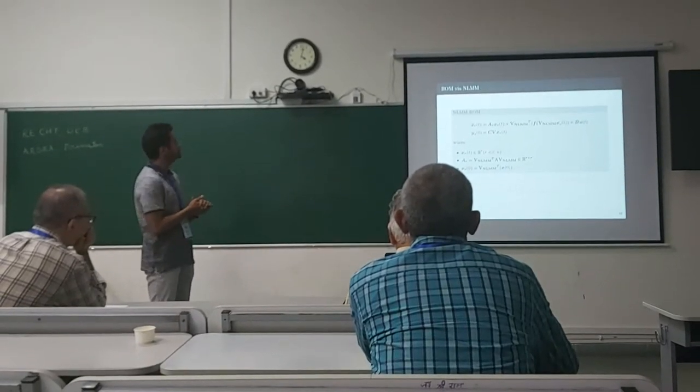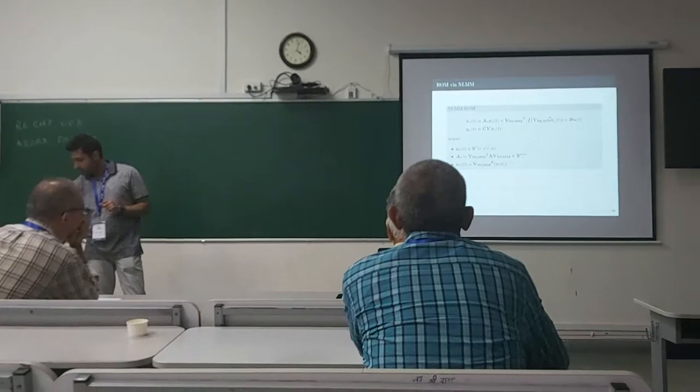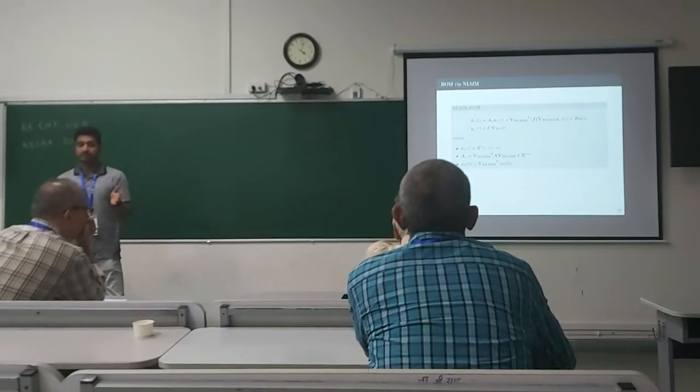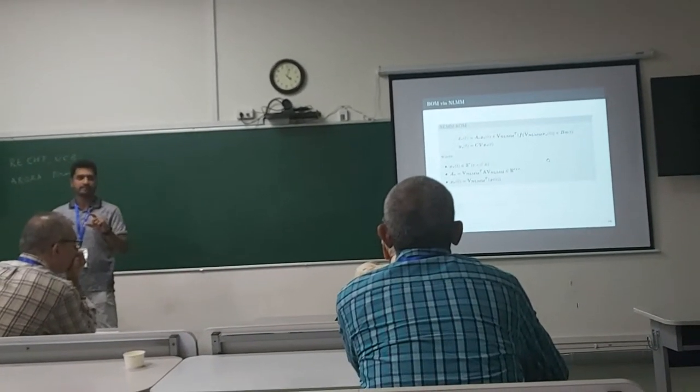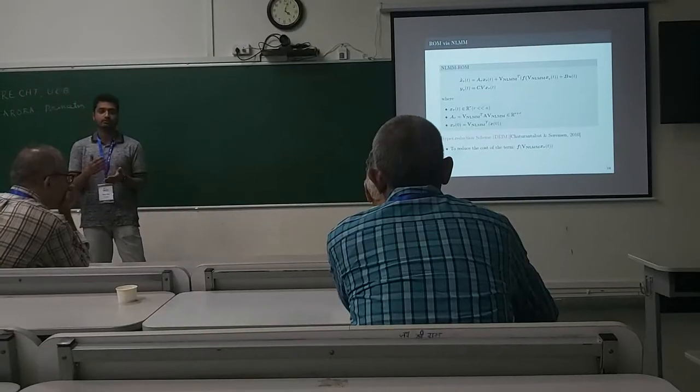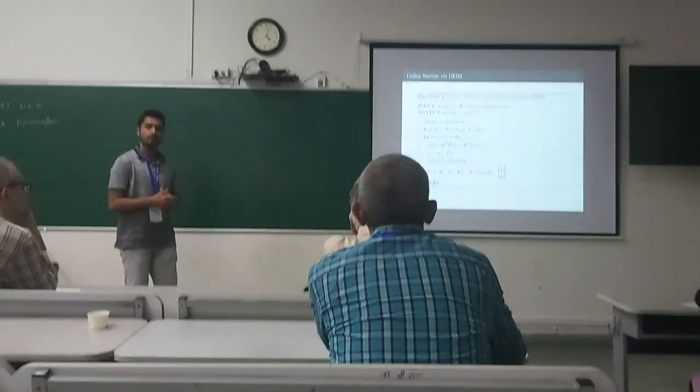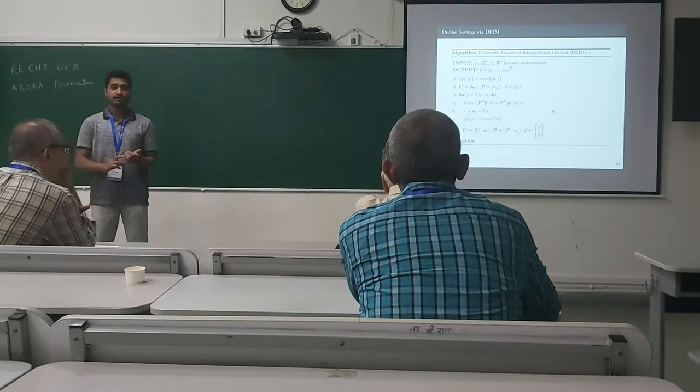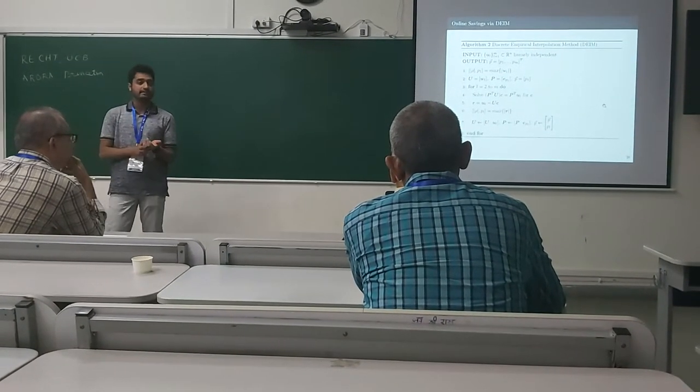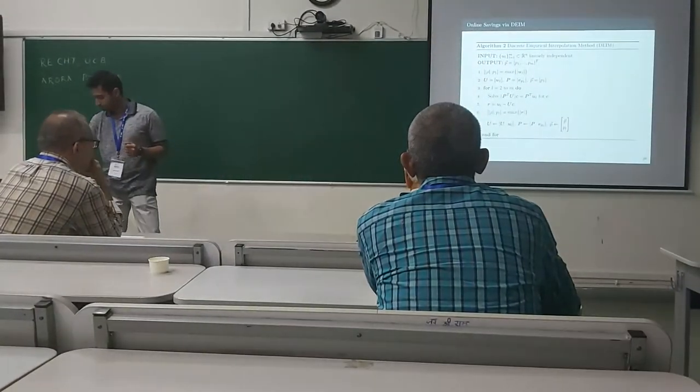The reduced-order model that we obtained using moment matching is of this form where x_r lives in reduced dimensions. However, this term F(V*x_r) still is in the dimension of the original system because we are taking linear combinations of the projection matrix. So there is a technique known as DEIM, discrete empirical interpolation method, to further reduce the order of the reduced order model, to make its online computation quite fast. The idea is to use an interpolatory projection instead of an orthonormal projection. What we do is take snapshots of the nonlinear function which still lies in the original space. Then we create their interpolation indices. We find the residual and pick the columns. It's a straightforward algorithm, just like a Gram-Schmidt process.